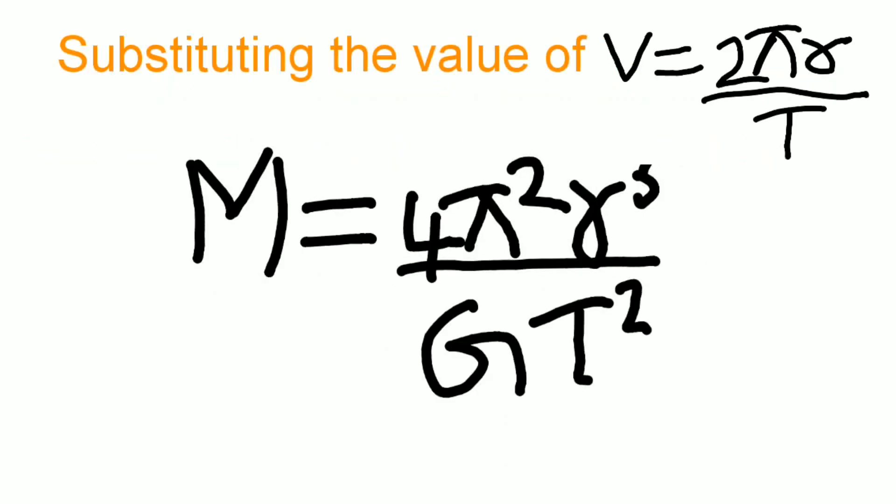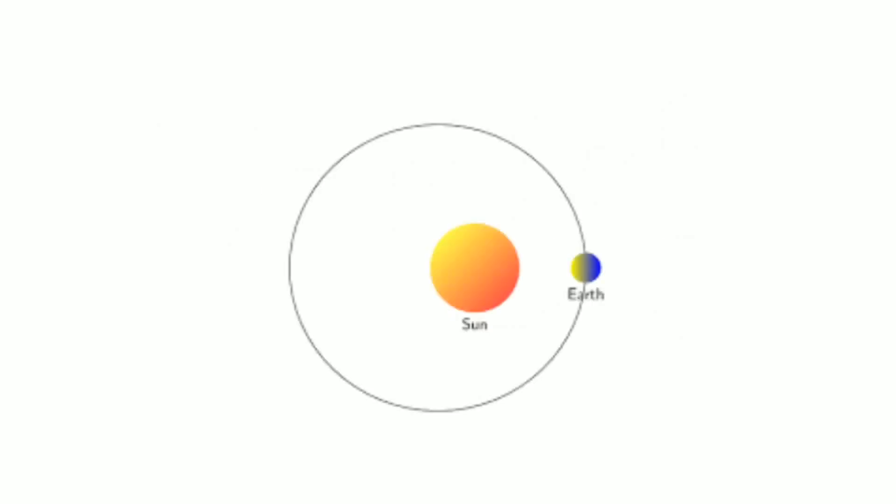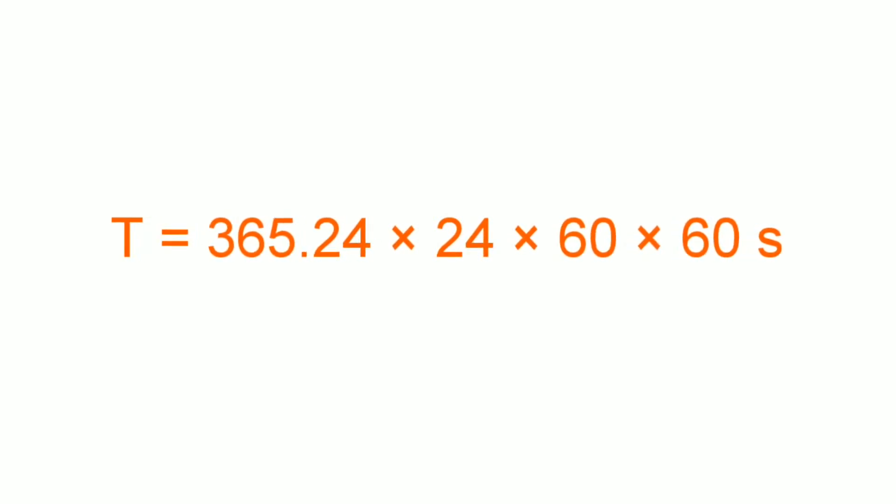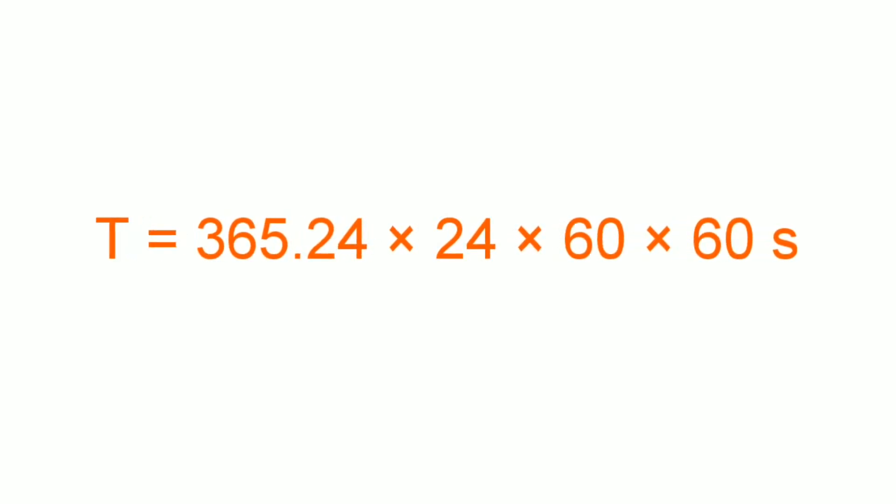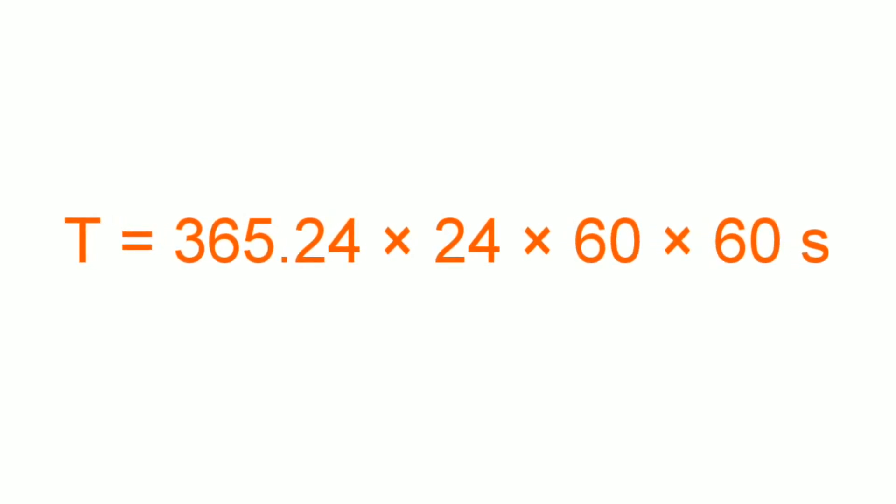Substituting the value of v, we get M = 4π²r³/(GT²). We know Earth takes 365.25 days to complete one revolution around the sun. Therefore, the time period T = 365.24 × 24 × 60 × 60 seconds.